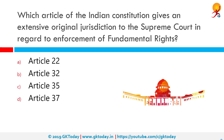Which article of the Indian constitution gives extensive original jurisdiction to the Supreme Court in regard to enforcement of fundamental rights? The correct answer is Article 32. Article 32 provides the right to constitutional remedies, which means that a person has the right to move to the Supreme Court as well as high courts for getting their fundamental rights protected. While the Supreme Court has the power to issue writs under Article 32, high courts have been given the same power under Article 226.